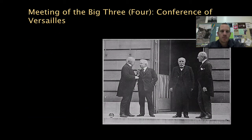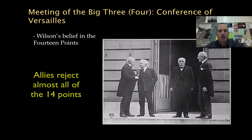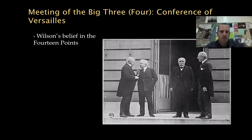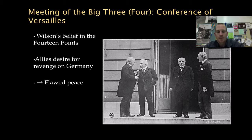The meeting of the Big Three — your book will call them the Big Four, don't forget that — includes Woodrow Wilson, Clemenceau, the British Prime Minister, and Orlando, the Prime Minister of Italy. Wilson is going to firmly believe in his 14 points, but the problem is the other leaders are not. They're going to reject it because they don't feel Wilson is a great diplomat, seeing him as merely a college president. The Allies — Britain and France specifically — want revenge on Germany. Ultimately, this leads to the flawed peace treaty and the ratification of the Treaty of Versailles, where the U.S. doesn't even get involved and has to make separate treaties afterwards.